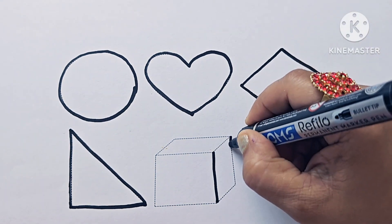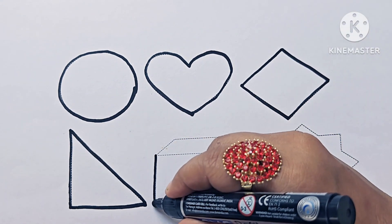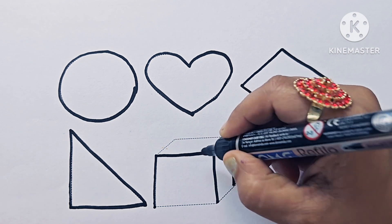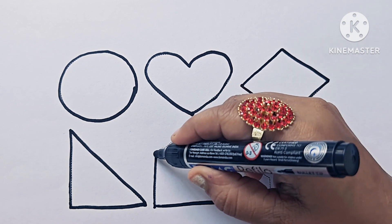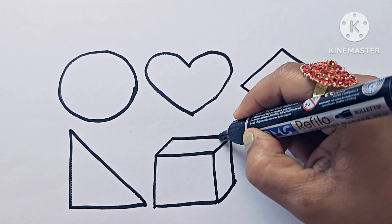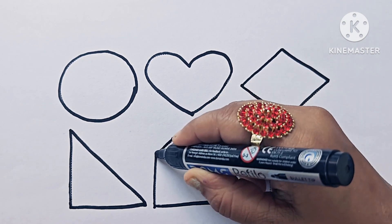This is cube. Cube is a 3D shape. Dice and ice cubes look like cube. It has 6 faces, 12 edges, and 8 vertices.